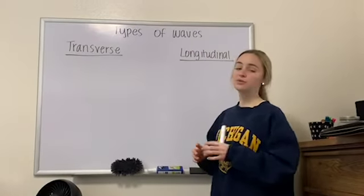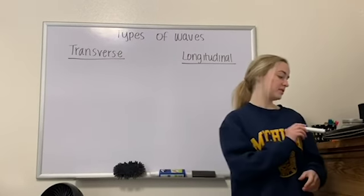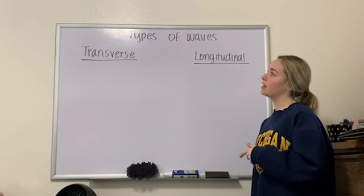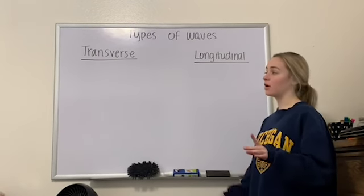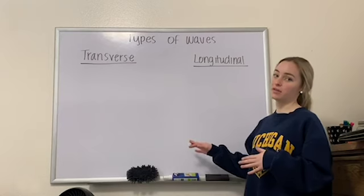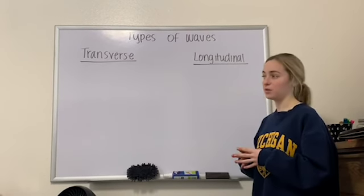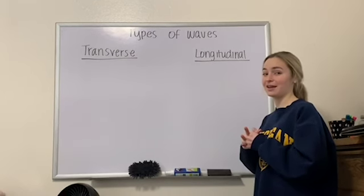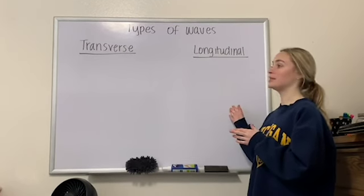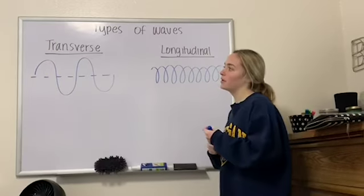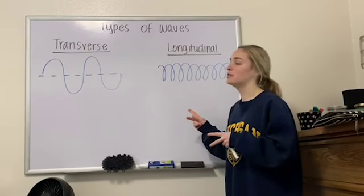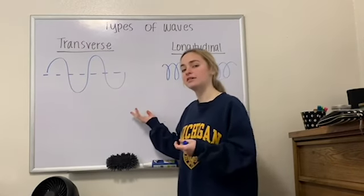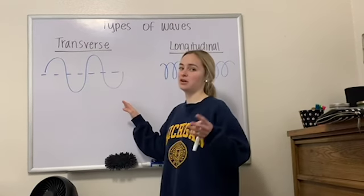There are two specific types of waves: transverse waves and longitudinal waves. All waves are either one or the other, or a combination of both. Pause this video and see if you can figure out what these two waves would look like. Here are pictures of both — the transverse wave is the basic one we've been drawing so far.